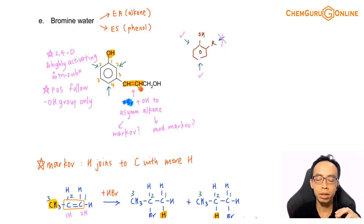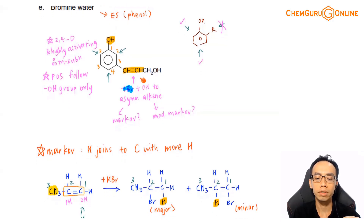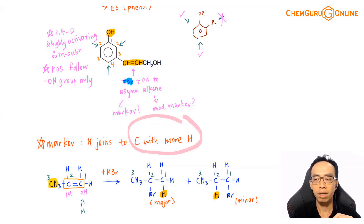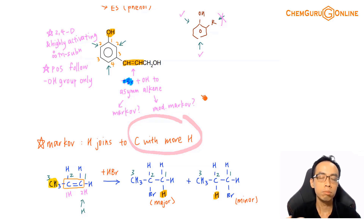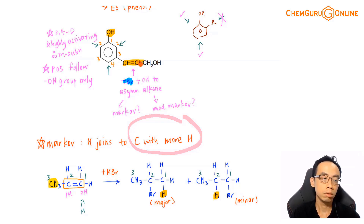Instinctively, when you look at this alkene, you realise there is a problem. The carbon on the left hand side has only one hydrogen, and the carbon on the right hand side also has only one hydrogen. So what if both alkene carbons have the same number of hydrogens? You realise the limitation of Markovnikov's rule hinges on the alkene carbons having different numbers of hydrogens. When both have the same number — one hydrogen each — we are stuck.